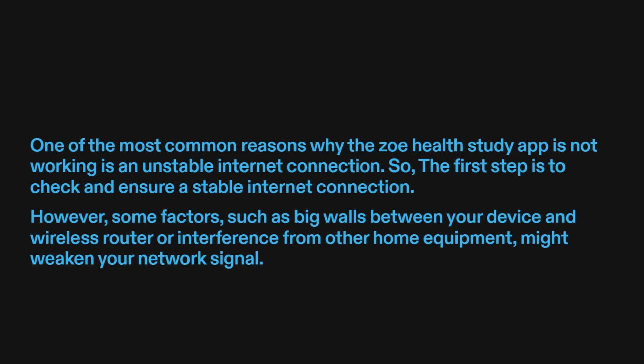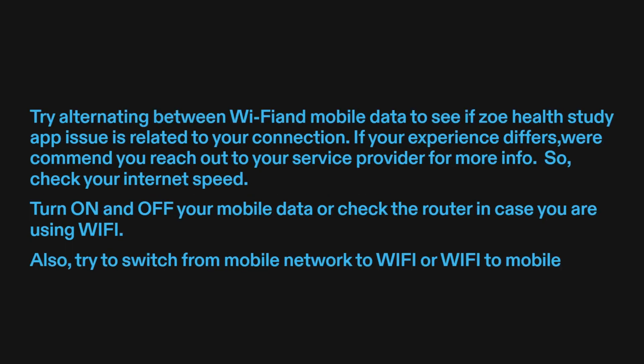However, some factors such as big walls between your device and wireless router, or interference from other home equipment, might weaken your network signal. Try alternating between Wi-Fi and mobile data to see if the Zoe Health Study app issue is related to your connection. If your experience differs, reach out to your service provider for more info. Check your internet speed, turn on and off your mobile data, or check the router if you are using Wi-Fi. Also, try switching from mobile network to Wi-Fi or Wi-Fi to mobile.